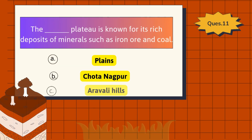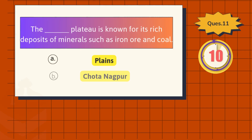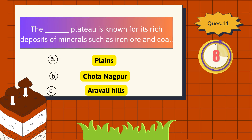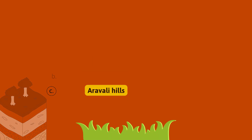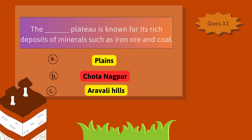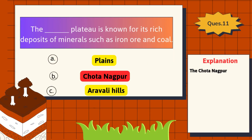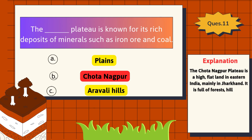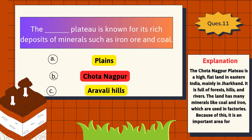Which plateau is known for its rich deposits of minerals such as iron ore and coal? The correct answer is the Chota Nagpur Plateau. The Chota Nagpur Plateau is a high, flat land in eastern India, mainly in Jharkhand. It is full of forests, hills, and rivers. The land has many minerals like coal and iron, which are used in factories. Because of this, it is an important area for mining and industry.